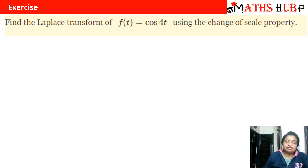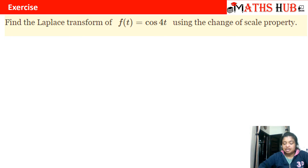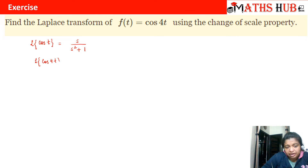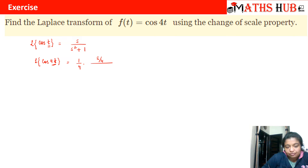The first question asks us to find the Laplace transform of f(t) = cos(4t) using the change of scale property. We know that Laplace of cos(t) is s/(s² + 1). So if I have to find Laplace of cos(4t), I am changing the parameter t to 4t, meaning I am multiplying t with 4. On the right hand side, I will divide by 4 and s will shift to s/4.